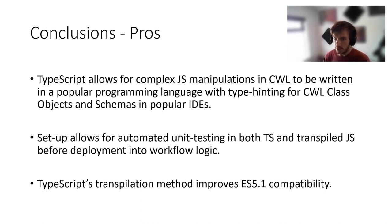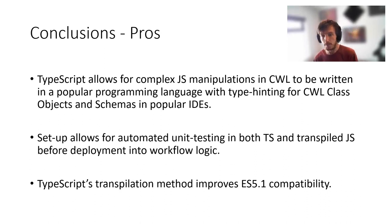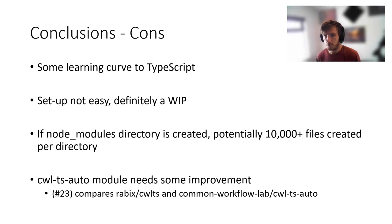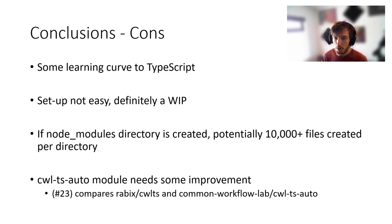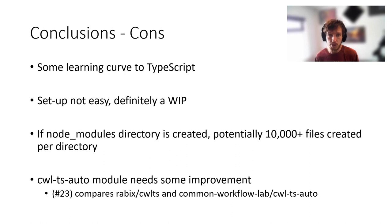TypeScript allows for complex JavaScript manipulations in CWL to be written in a popular programming language with type hinting for CWL class objects. Our setup allows for unit testing of functions in both TypeScript and JavaScript before deploying them into CWL command line tools or workflows. TypeScript's transpilation method drastically improves ES5.1 compatibility of our expressions. There is certainly a learning curve to TypeScript, particularly for those not used to typed languages — coming from Python, this was mind-boggling at first. The setup scripts are not trivial and this is still a work in progress. The CWL TS Auto module needs improvement to be more user-friendly; in the meantime, the Ravix CWL TS module works fine if all you need is the File and Directory object classes.